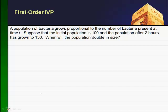Let's solve the following application problem. We have a population of bacteria that grows proportionate to the number of bacteria present. So we have a rate of growth that's proportional to the actual amount present at all times T.